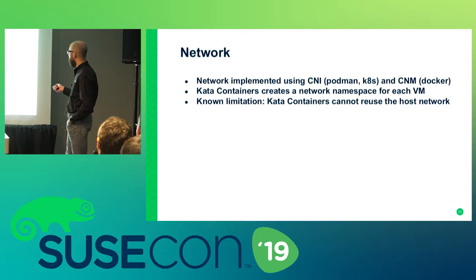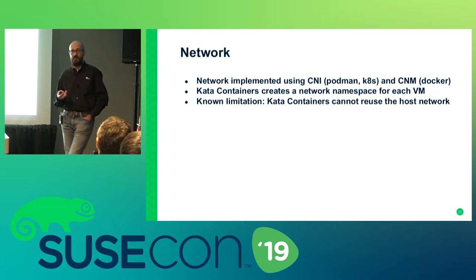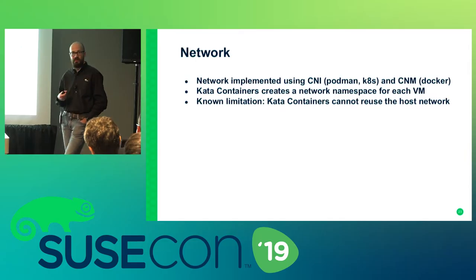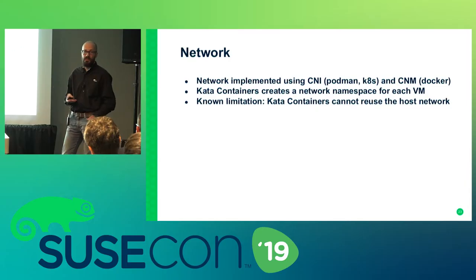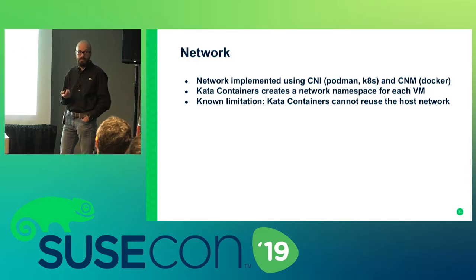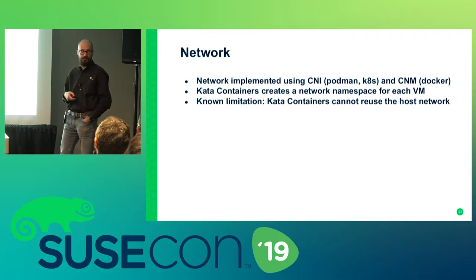One limitation: sometimes you need to share the host's network stack with a container — for example, Kubernetes CNI plugins like Flannel, Cilium, and Calico manage the host network stack and need to run in the same network namespace as the host. With Kata, you can't do that, because all containers run inside the VM. However, this is fine for workloads you actually trust — and if you trust a workload, why incur the extra penalty of a hypervisor?